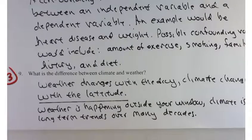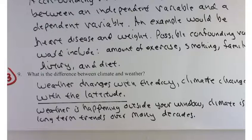Weather, quite simply, is happening outside your window. That's what's happening right now. It's what the weatherman tells you is going to happen tomorrow. In contrast, climate is long-term changes, and climate is the average weather for a region. Climate changes with the latitude. Weather changes with the day.